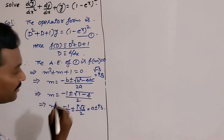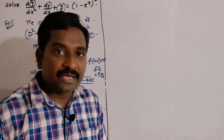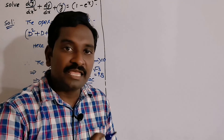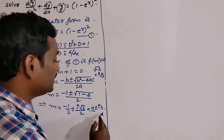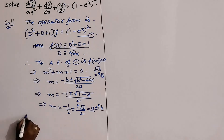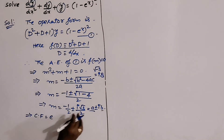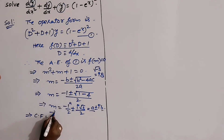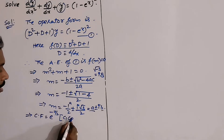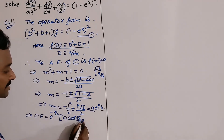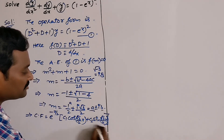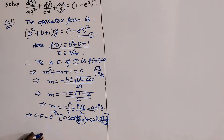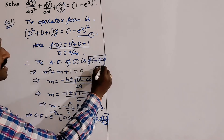The roots are in the form a ± ib. Whenever roots are in this form, the complementary function is eᵃˣ(c₁cos(bx) + c₂sin(bx)), where b is the imaginary part. Here a = −1/2 and b = √3/2, so the complementary function is e^(−x/2) · (c₁cos(√3x/2) + c₂sin(√3x/2)). The complementary function always depends on the nature of the roots of the auxiliary equation f(m) = 0.